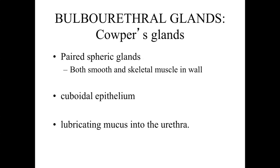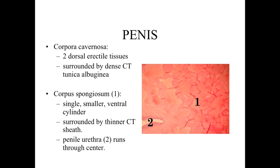The Cowper's glands are going to be lined by a simple cuboidal epithelium. The final structure we're going to look at within the male reproductive tract is the penis.